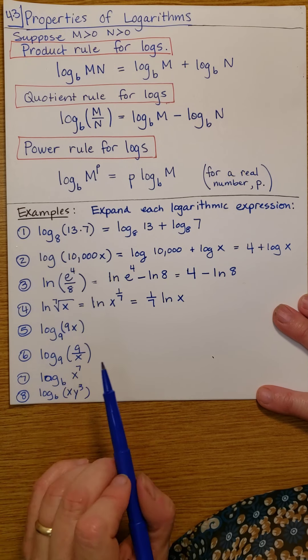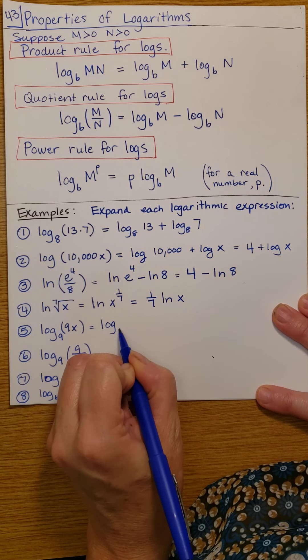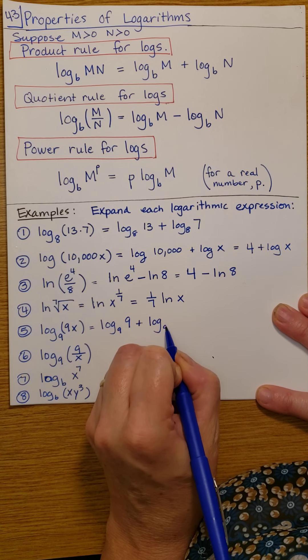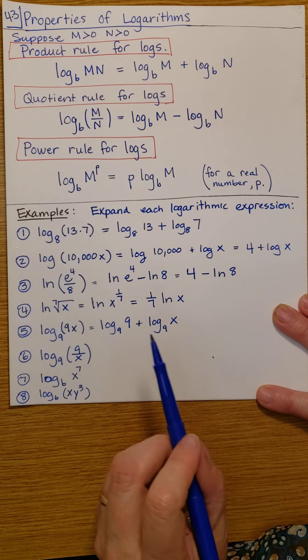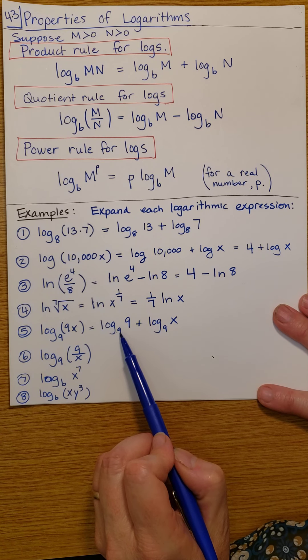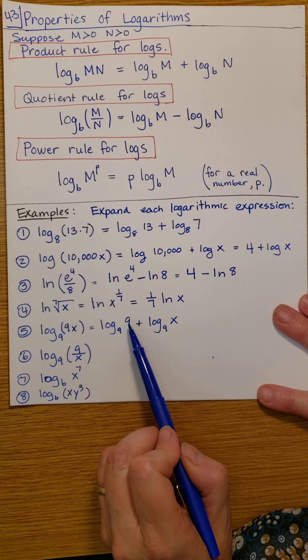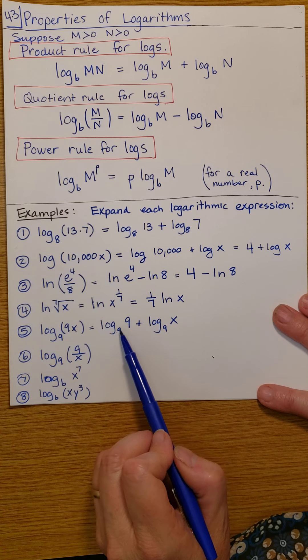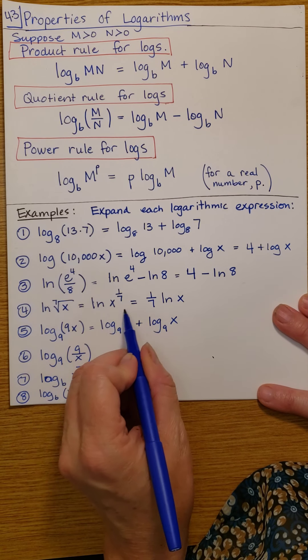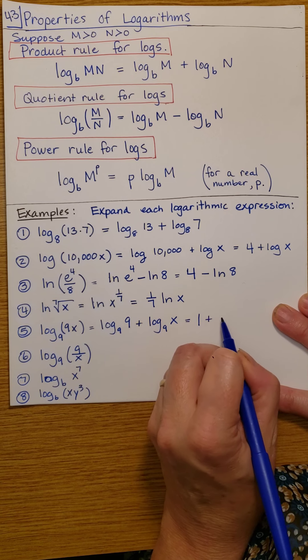Here, notice that we have base 9. And this is a product. So I'm going to say log base 9 of 9 plus log base 9 of x. I take that product and write it as the sum of logs. Notice I have 9 here, and the base is 9. So the log is the exponent. What exponent on 9, if I have base 9, is going to give me 9? Well, that's just 1. So this whole expression here is 1 and log 9 of x. We're adding that.